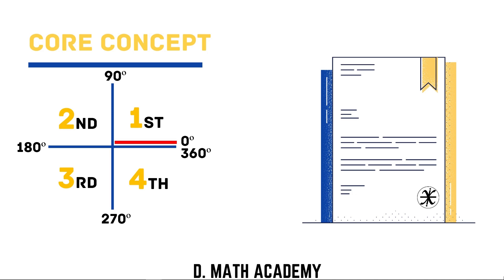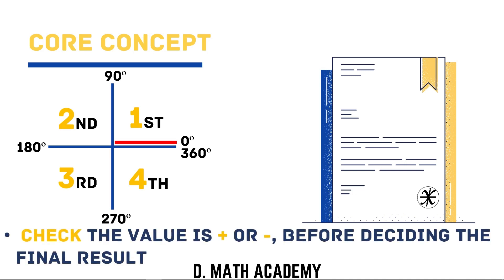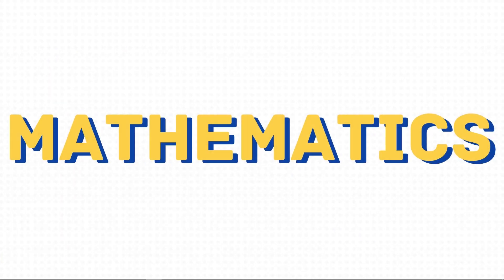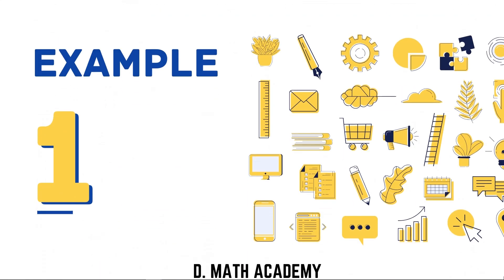To determine where your value will appear, you have to check whether the value is positive or negative before deciding the final results. I'll further elaborate this point through examples. For degree-related results, you are required to include one decimal place if there are multiple decimals. I'll be covering three types of questions surrounding this topic that will be assessed in your mathematics exam.